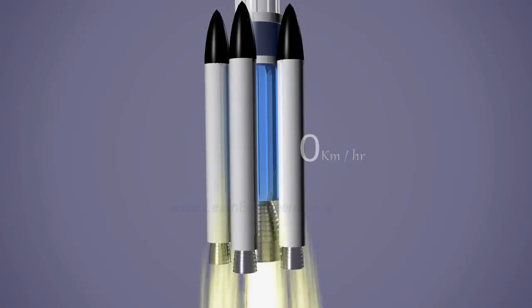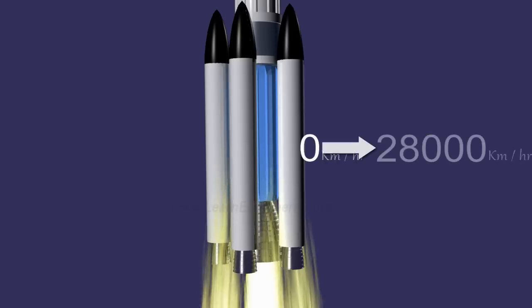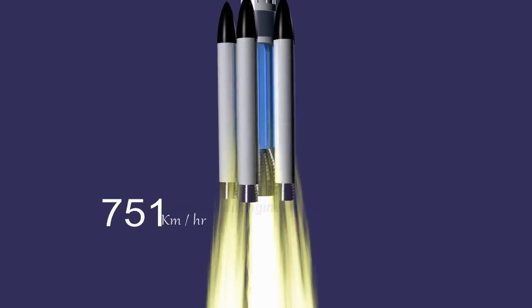The rocket starts with zero speed at the ground, but it should accelerate to a final speed of around 28,000 kilometers per hour to successfully achieve orbit.